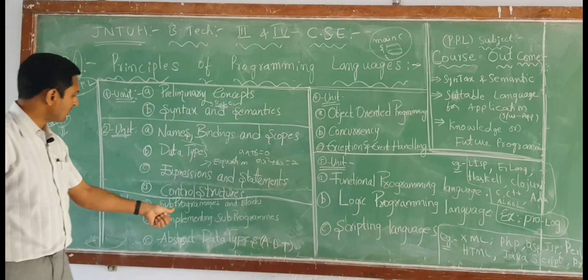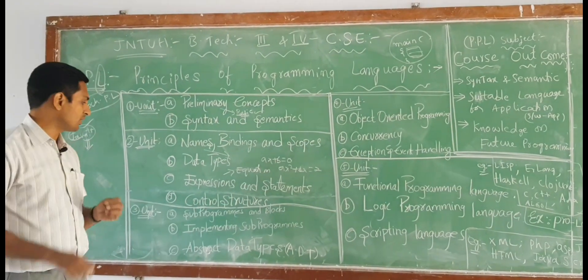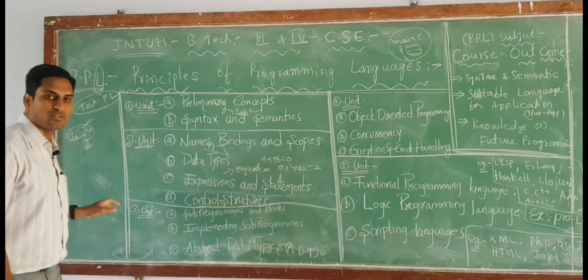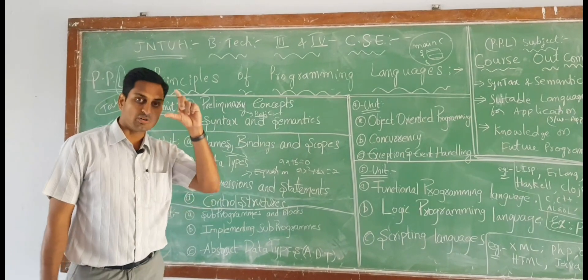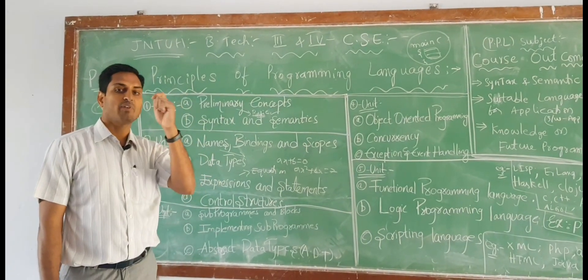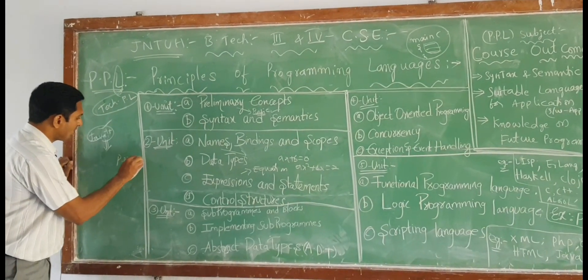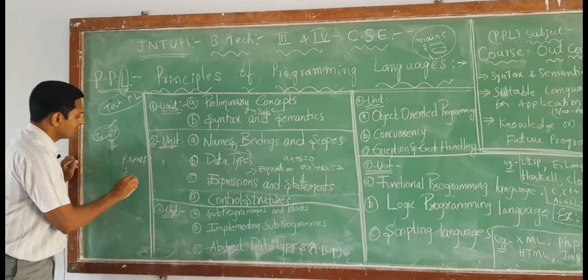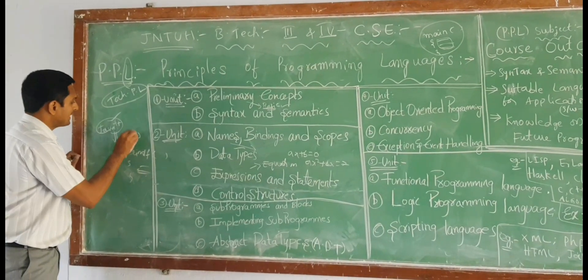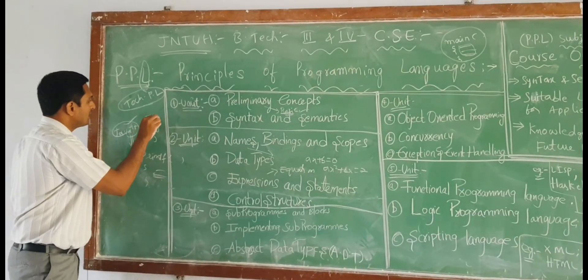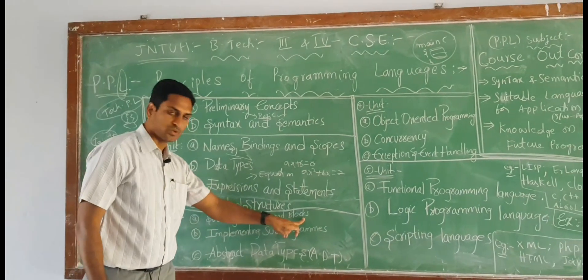In second unit we have subprograms and blocks. Subprograms means program within program. Blocks: in my previous video I told you the definition of function. Function is a block of code which has some specific functionality or task to do. For example, printf has a function of printing the statements. We have open brackets, square brackets, angular brackets, and curly braces. The curly braces indicate the block of code.